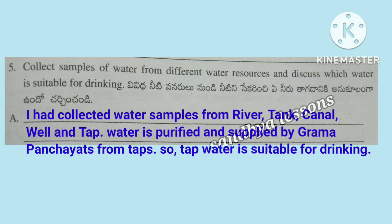Fifth question: Collect samples of water from different water resources and discuss which water is suitable for drinking. I collected water samples from river, tank, kennel, well, and tap. Water is purified and supplied by gram panchayats from taps. So tap water is suitable for drinking.